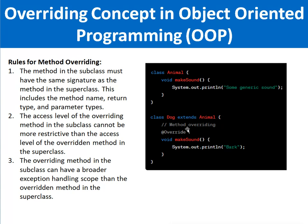The method in the subclass must have the same signature. Signature means the attribute types, number of attributes, method name, return type, and parameter types — all of those are called the signature. It must have the same signature as what is present in the base class. The same signature should be available in the child class as well; if there is a difference, there will be a compiler error.